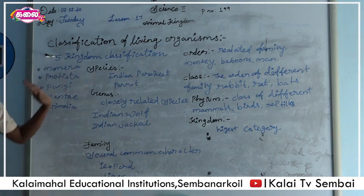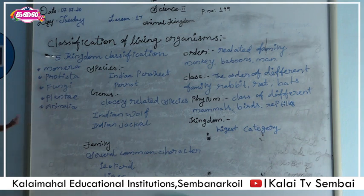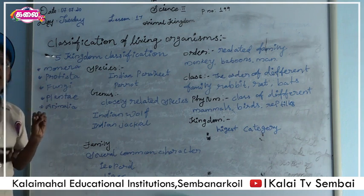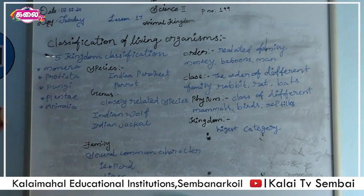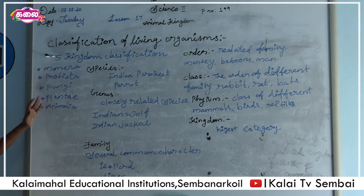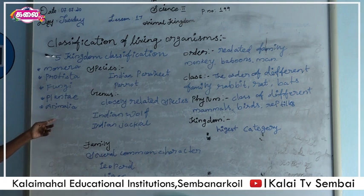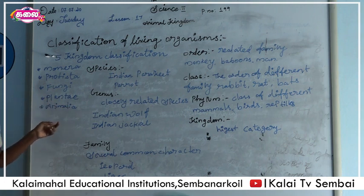Here's a 5-kingdom classification. They make it a lot better. Take a look at the third one. Second one — Animal Kingdom. Can you see the Animal Kingdom? Number eight is animals.